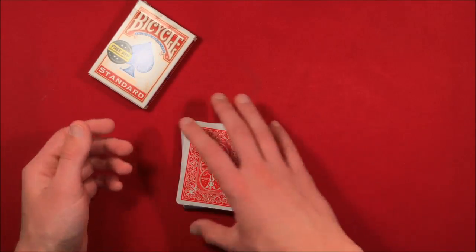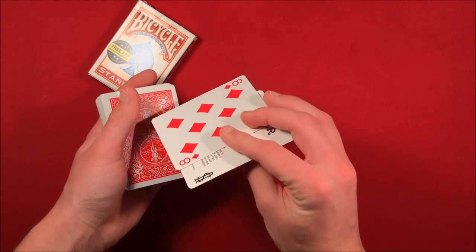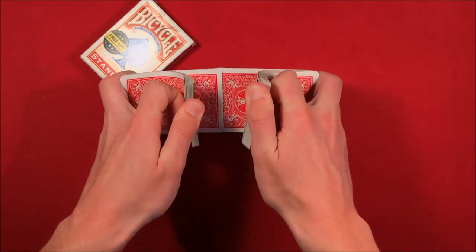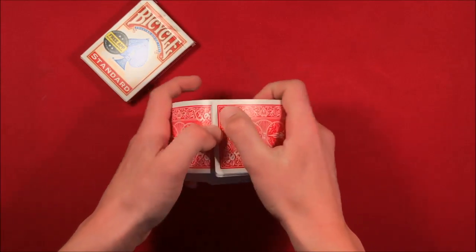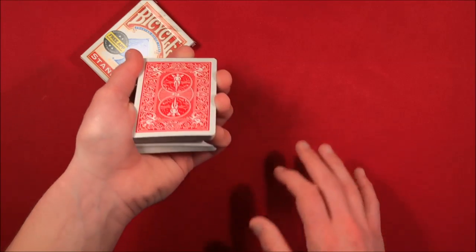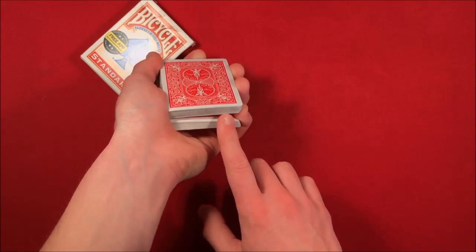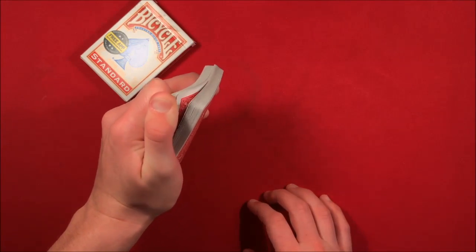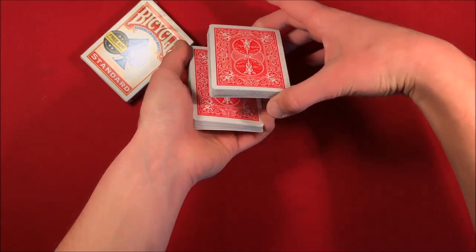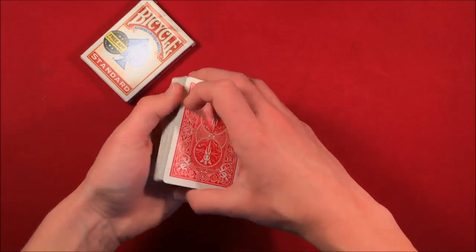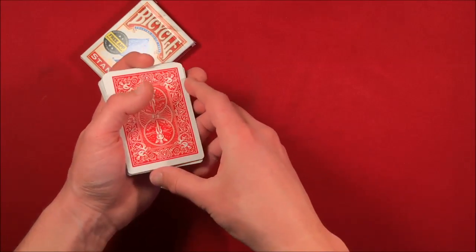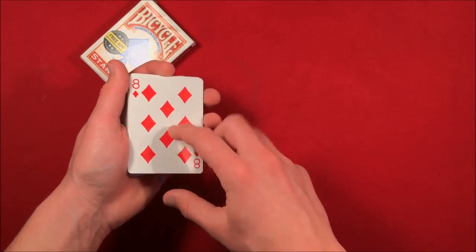So if you want, you can have them hold it. And then from here, you're left with the eight of diamonds second from the top. So you can shuffle the deck, leaving those two cards on top. And then you can do a really simple riffle force. You do a pinky cut, hold the break here. They say stop whenever they like. And all you have to do is pick it up from the pinky break, cut the deck, and now you do a really simple double lift, flipping over these two cards, revealing the eight as one.